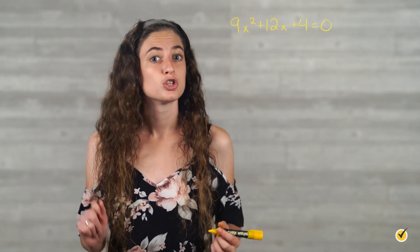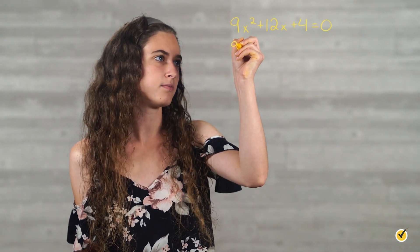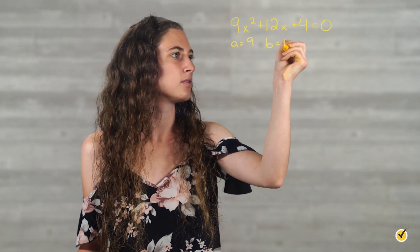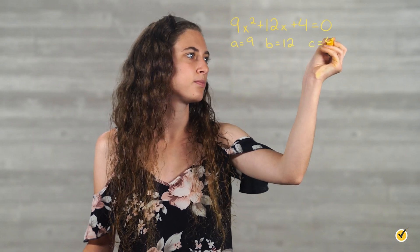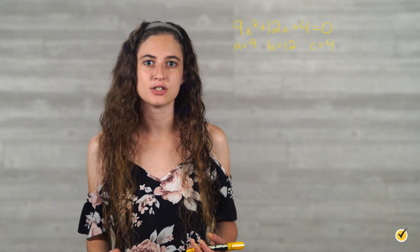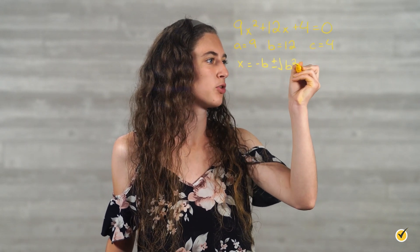Let's take a look at this one together. Start by identifying the values for a, b, and c. Based on the equation, we can see that a is equal to 9, b is equal to 12, and c is equal to 4. Next, substitute the values for a, b, and c into the quadratic formula. So the formula is x is equal to negative b plus or minus the square root of b squared minus 4ac all over 2a.